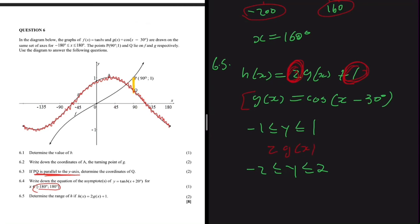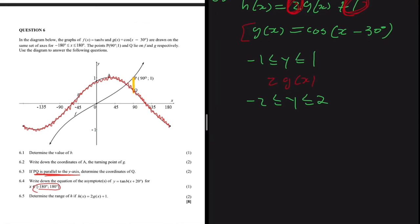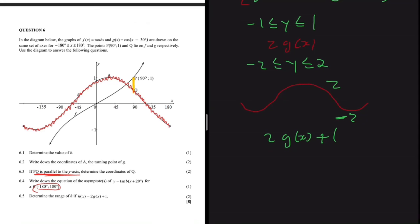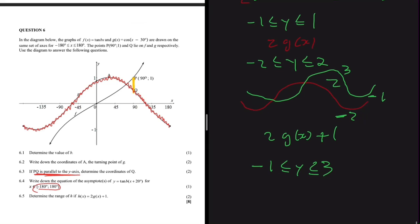Adding 1 shifts the graph one unit upward. So the lowest point moves from -2 to -1, and the highest point moves from 2 to 3. Therefore, the range of h(x) = 2g(x) + 1 is -1 ≤ y ≤ 3.